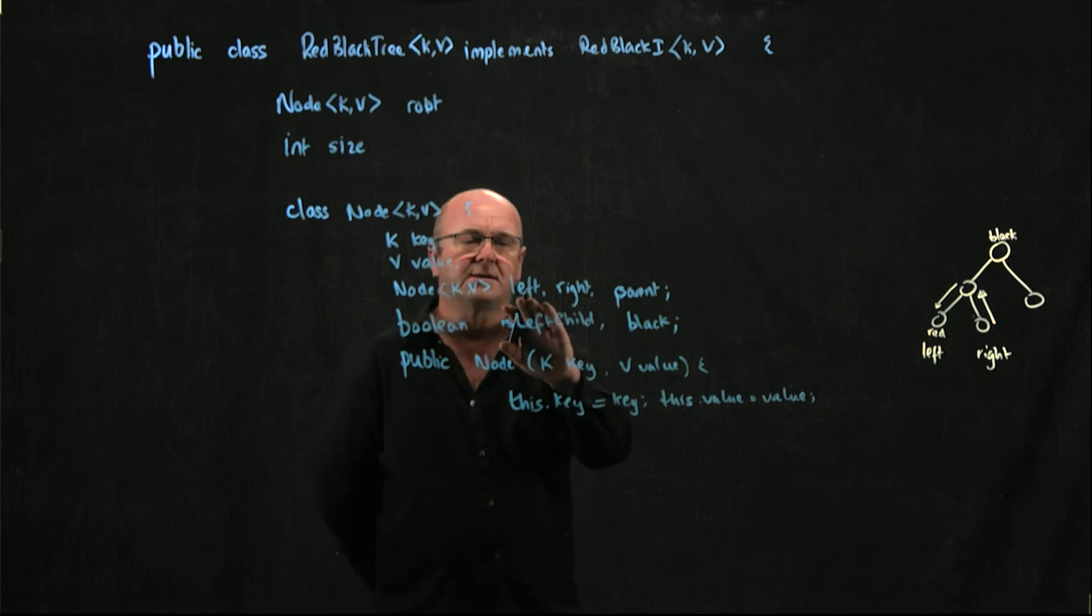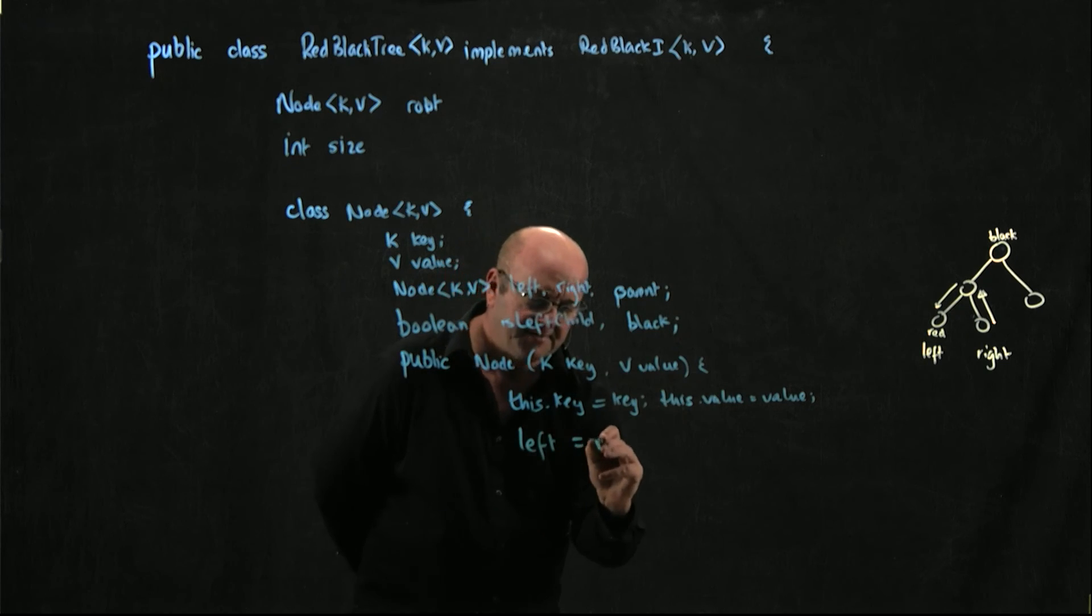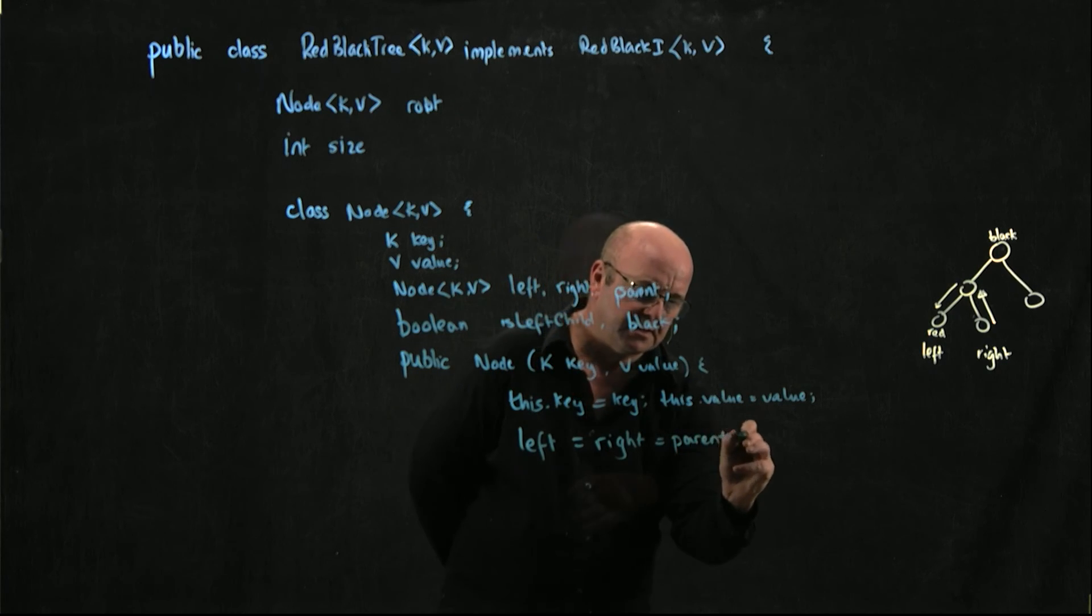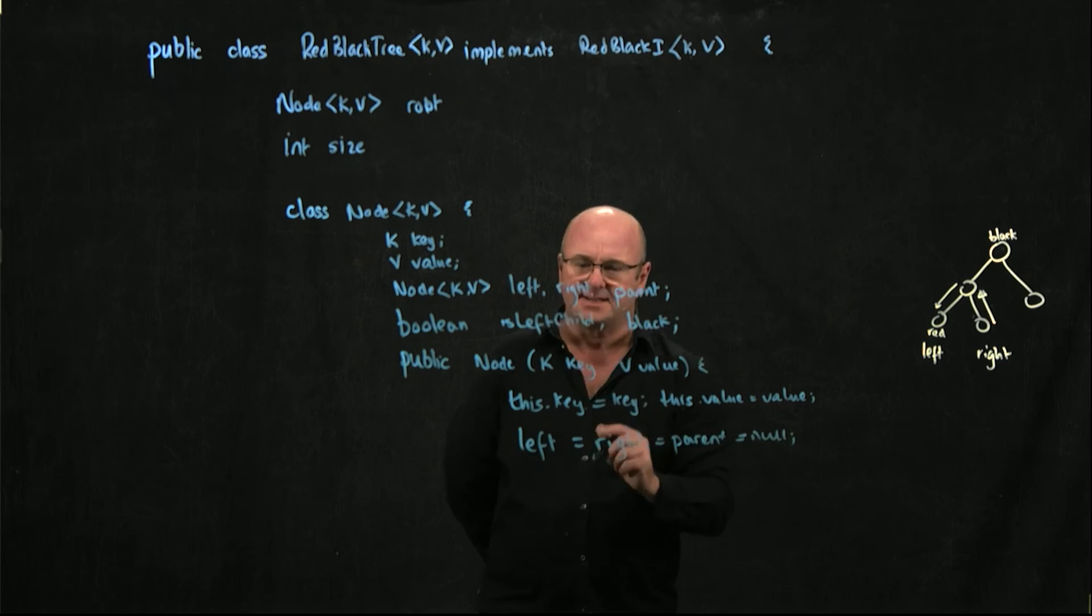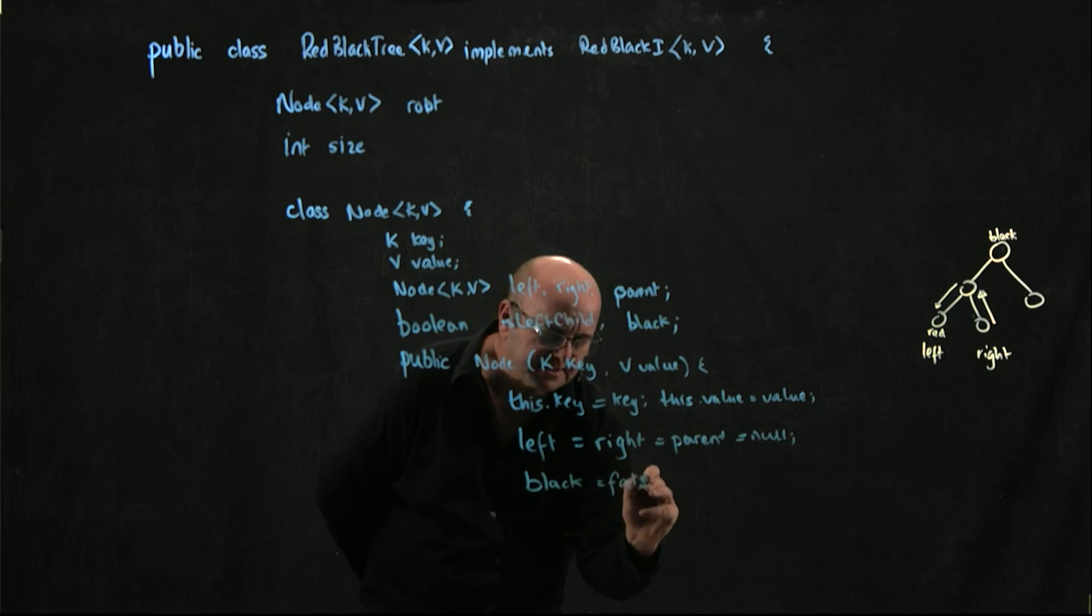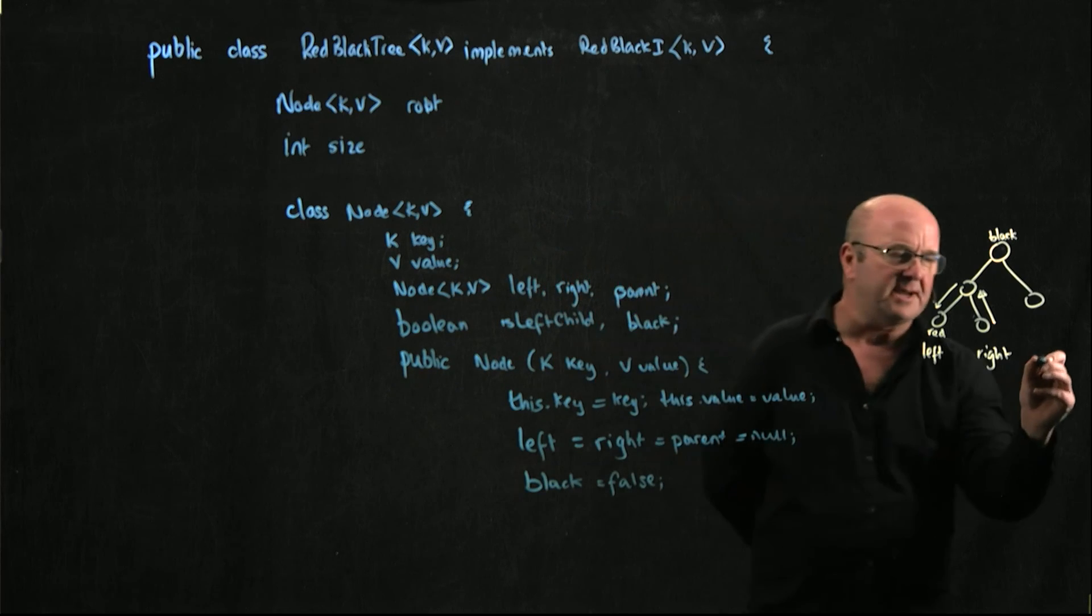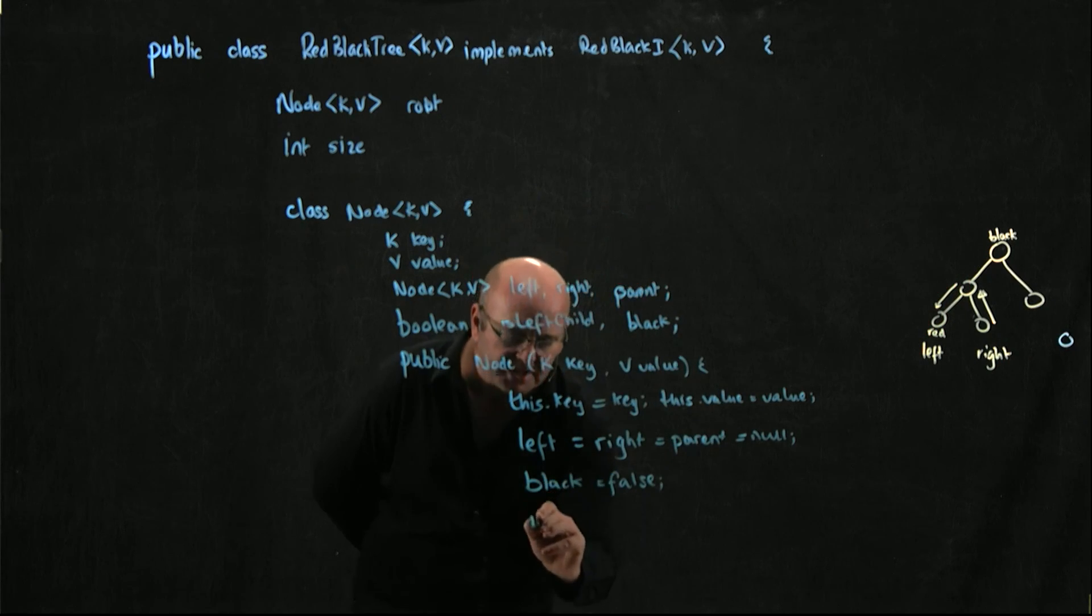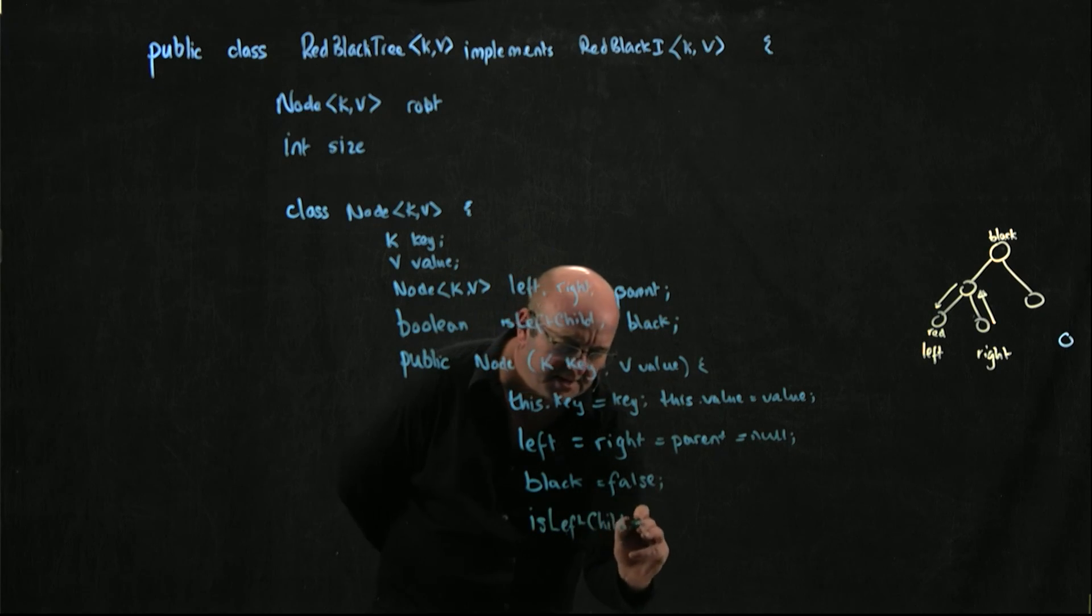We need to set our child nodes and our parent node. When we initiate a node, left is equal to right is equal to parent is equal to null. One of our rules is that new nodes are red, so black is equal to false. Since this node is just a node hanging out by itself, we haven't joined it to anything yet, we don't know whether it's a left child or a right child. So we'll just set isLeftChild equal to false.